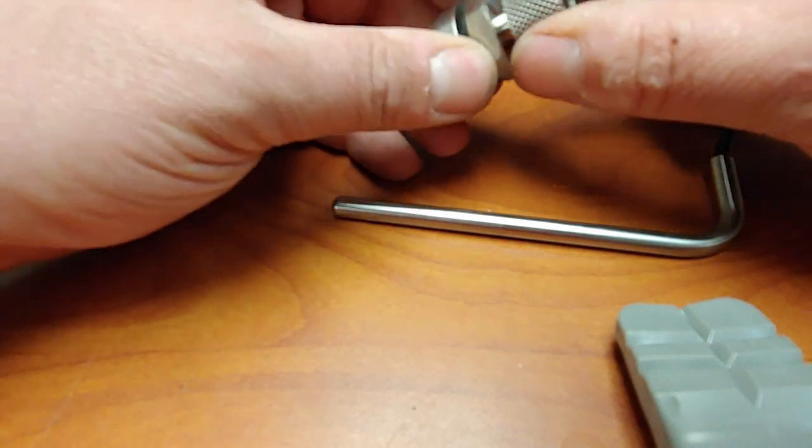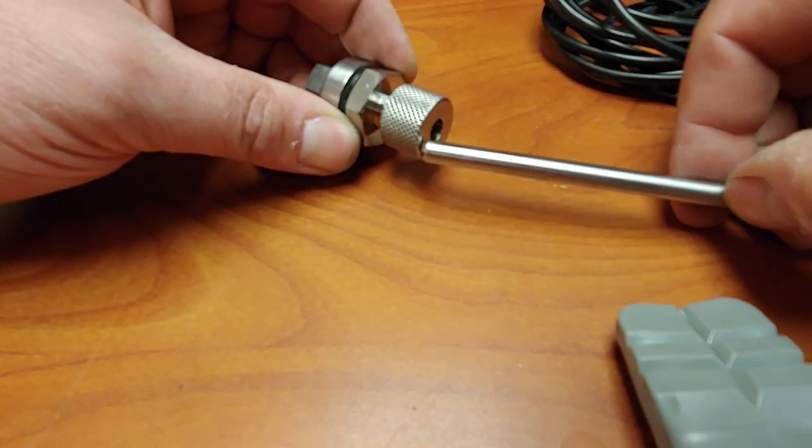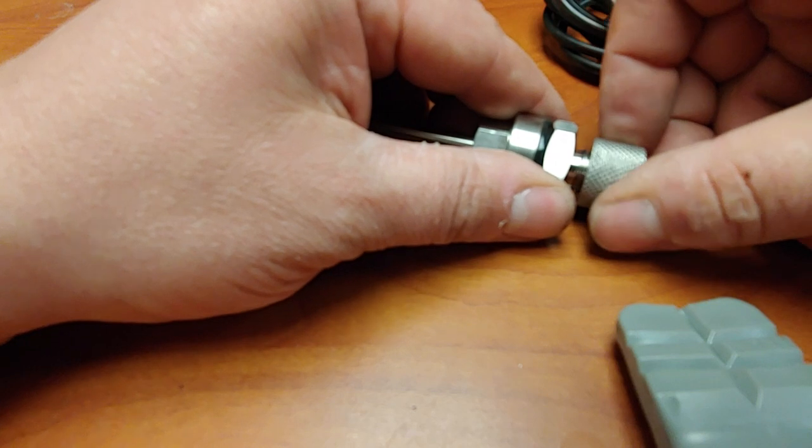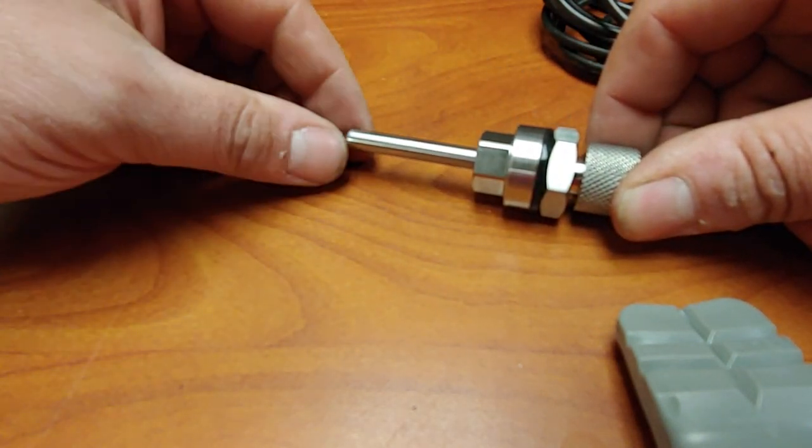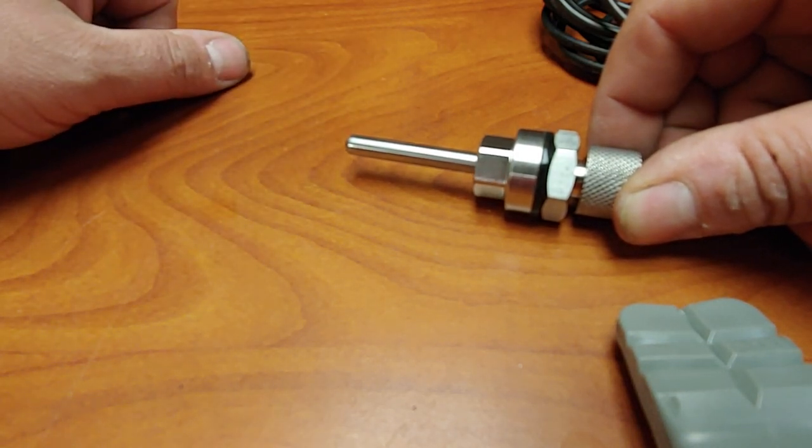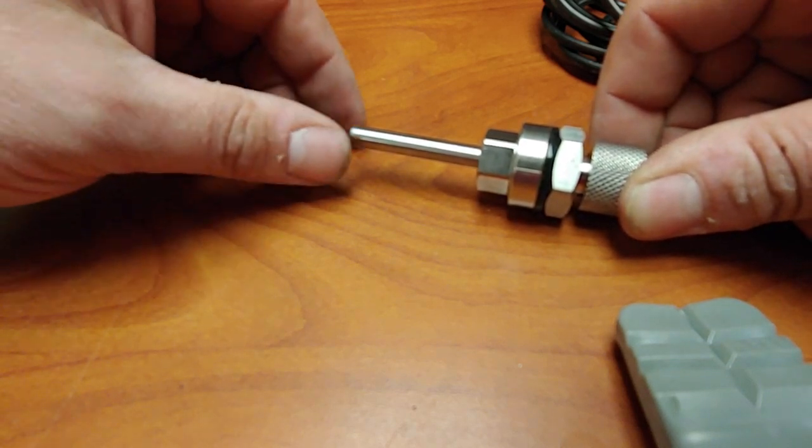Once this is installed, you loosen up the knurl on here and slide this probe in to whatever depth you want, then tighten this up until it's snug. It holds the probe inside the kettle and now the brew commander knows what temperature it is inside your kettle, so this would go into a boil kettle or hot liquor tank, for example.